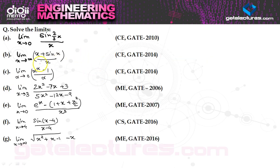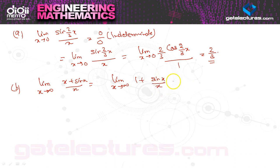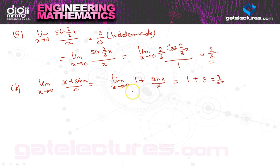Example (b): limit x→∞, (x + sin x) / x. We can rewrite this as limit x→∞, 1 + sin x/x. Since this is a distributive limit, it equals 1 + limit x→∞, sin x/x. Applying L'Hôpital's rule, sin x/x → 0 as x→∞, so the answer is 1.